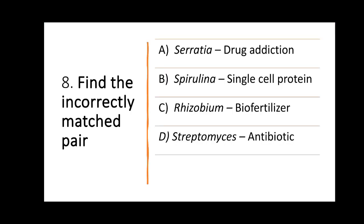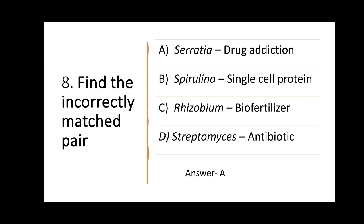Next question: find the incorrectly matched pair. Options are: A) Serratia — drug addiction, B) Spirulina — single cell protein, C) Rhizobium — biofertilizer, D) Streptomyces — antibiotic. All pairs are correctly matched except option A. Serratia is a gram-negative anaerobic bacteria and is a food spoilage-causing organism affecting fruit juices, fish, bakery products, etc. It is not related to drug addiction.